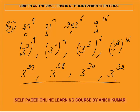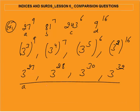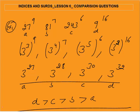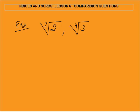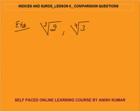Now the base is the same, so the number with the higher power will be the largest. That was A, B, C, and D. So D is greater than C, C is greater than B, and B is greater than A. In this way we can arrange the numbers in descending order.